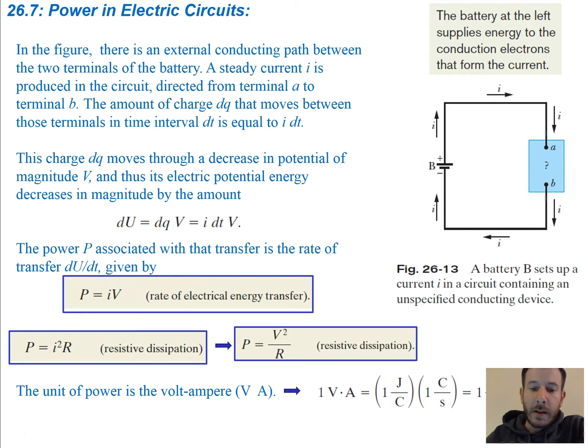So power and electric circuits. In the figure over here, there's an external conducting path between the two terminals of a battery. So just a circuit is created. There's our battery here. A steady current I is produced in a circuit directed from terminal A to terminal B, so from A to B.